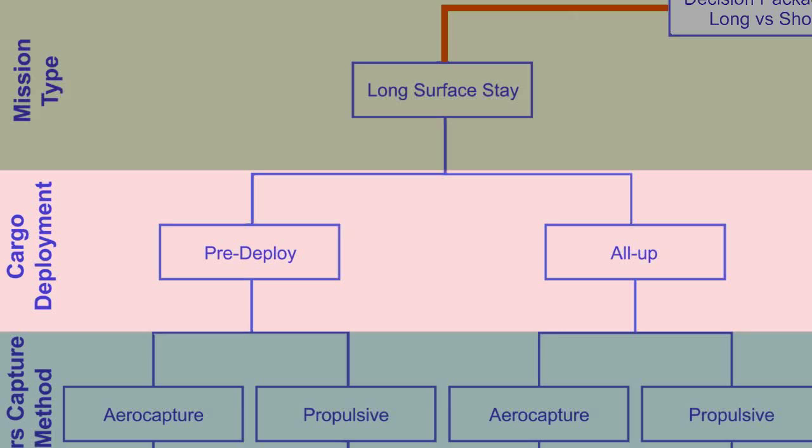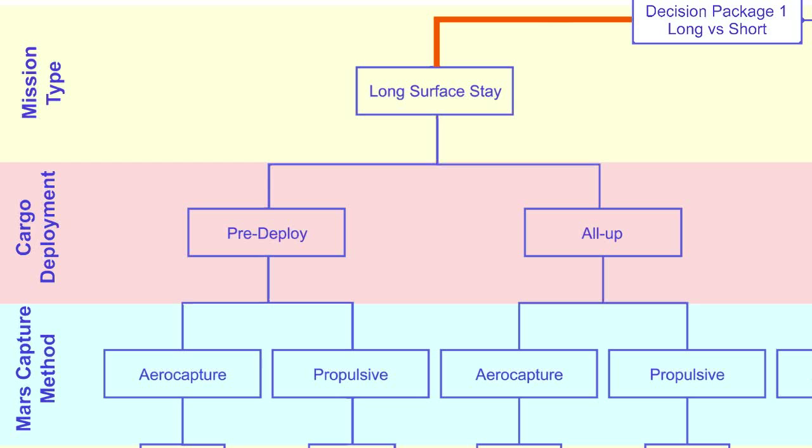Another set of trades is: do you send the cargo to Mars with the crew, or do you send the cargo by itself? Why build a vehicle big enough to hold both crew and cargo — a big station wagon or camper — when you could separate them? The crew can launch to Mars once they know all their cargo is safely at the planet. This idea of pre-deploy versus all-up asks: is it better to take crew and cargo together on one big mission, or to pre-deploy all the cargo? Maybe you've landed the habitat on the surface so their house is ready when they land, with all their food and supplies — and even pre-deployed the return capsule into Mars orbit.